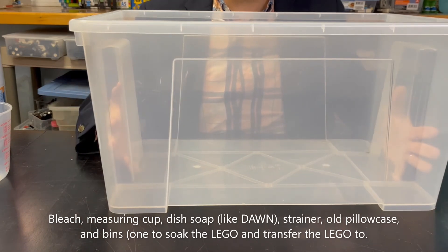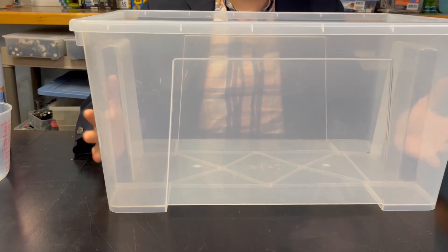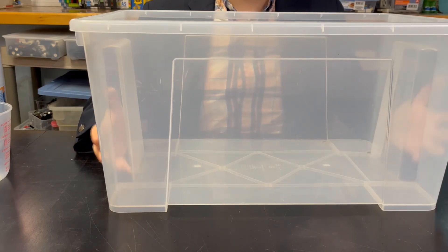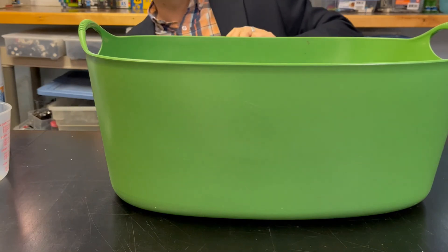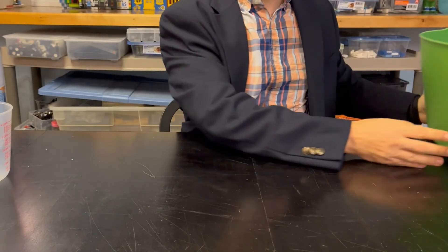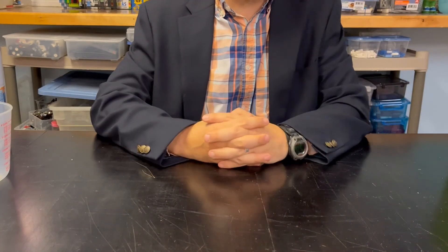Now depending on the amount of Lego you have to clean will dictate how big the bins will need to be. Since I have a lot of Lego, I need two big bins. Let's get into it with the first step of soaking.